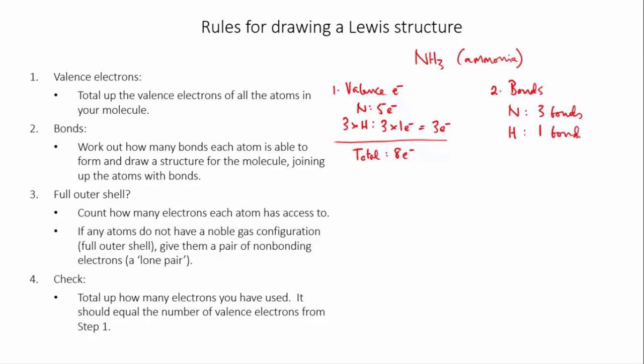So we need to draw a structure in which nitrogen forms three bonds, and each hydrogen only forms one. And the only way that we can do that is to put the nitrogen in the middle, and then use one bond each to join up the three hydrogens.